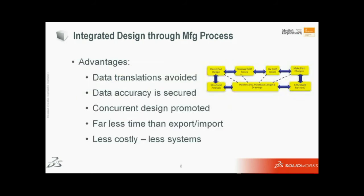The advantages of a fully integrated design-through-manufacturing process include: data translation is avoided entirely; data accuracy is secure because the design model is always the master model driving everything downstream — tooling, electrodes, drawings, and CAM programming. Nothing is ever out of sync. Concurrent design is promoted; you can start initial CAM programming earlier, and design changes don't force a complete restart. It's far less time-consuming and less costly to train and maintain systems that are fully integrated.